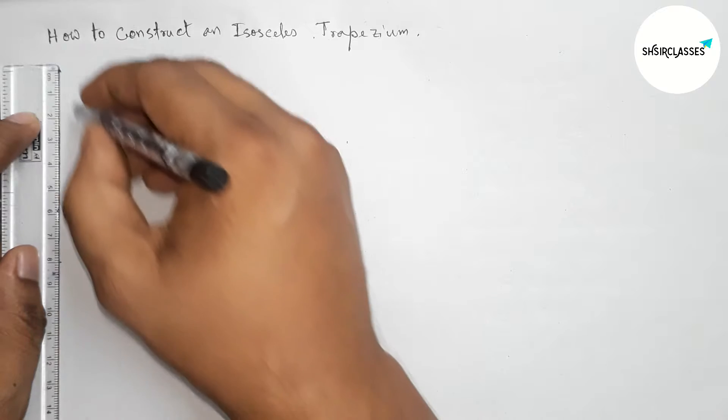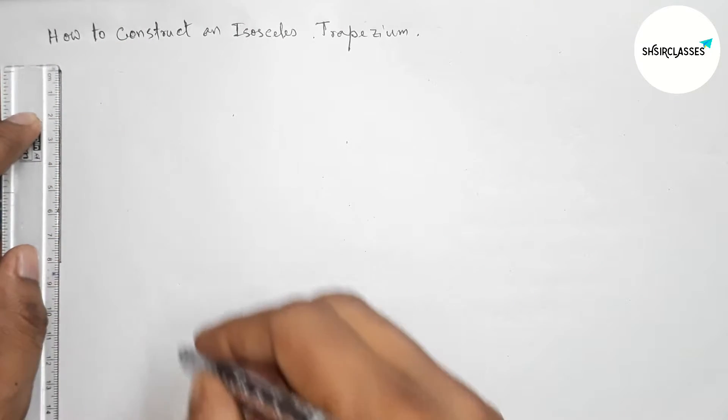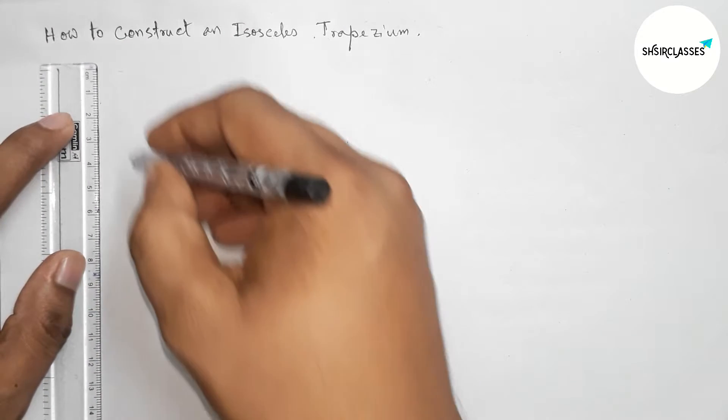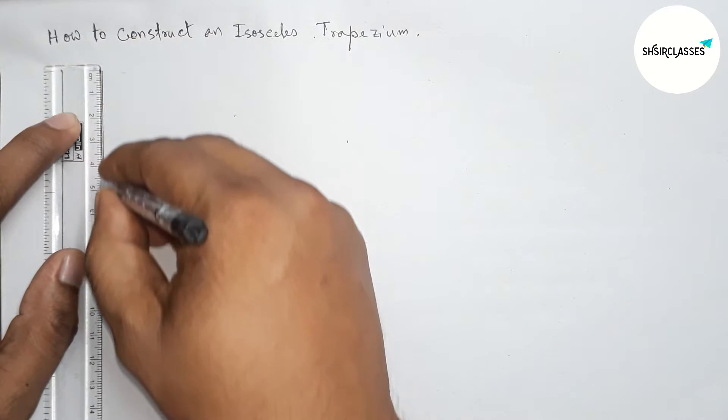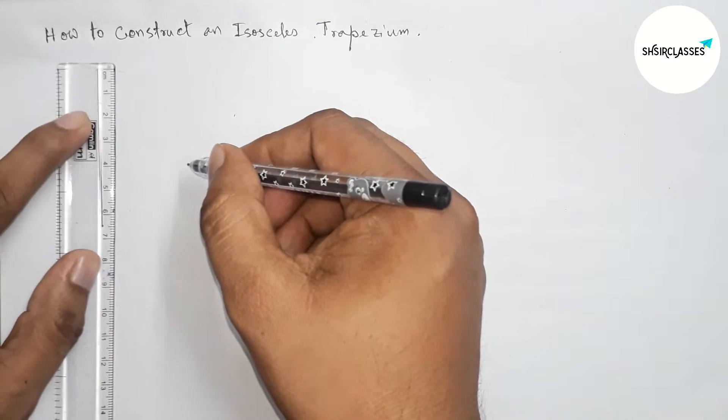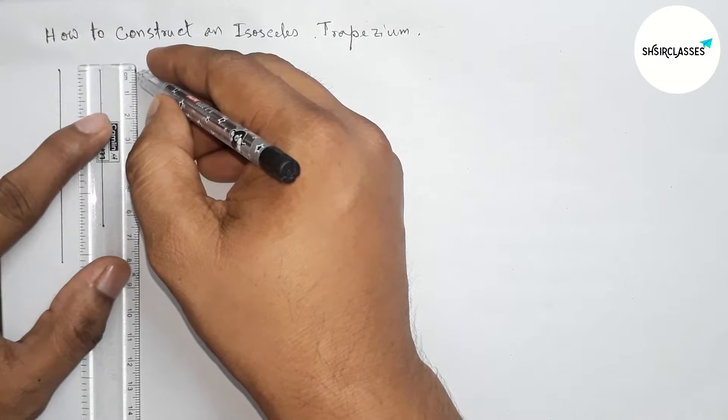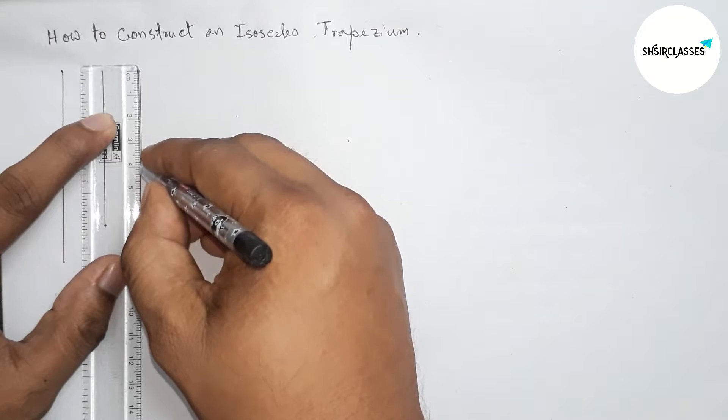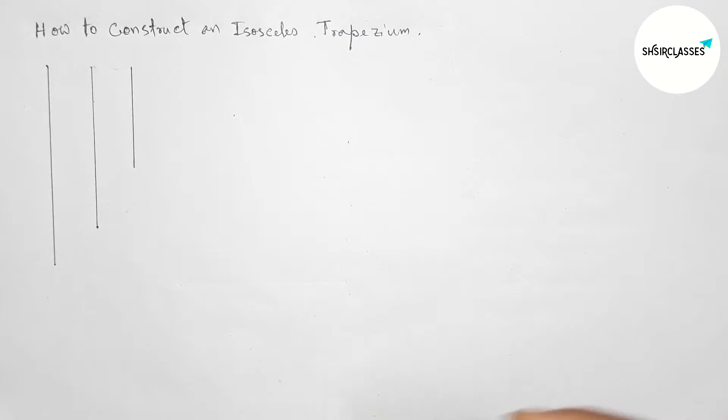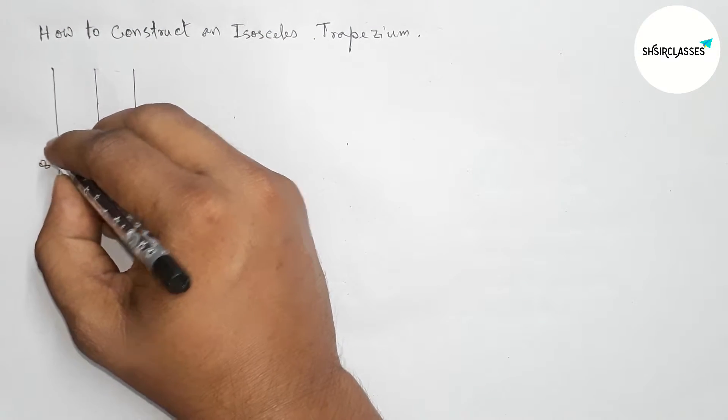First of all, drawing here a line segment of length 8 centimeters, drawing another line segment of length 6.5 centimeters, and last drawing here a line segment of length 4 centimeters by this way.